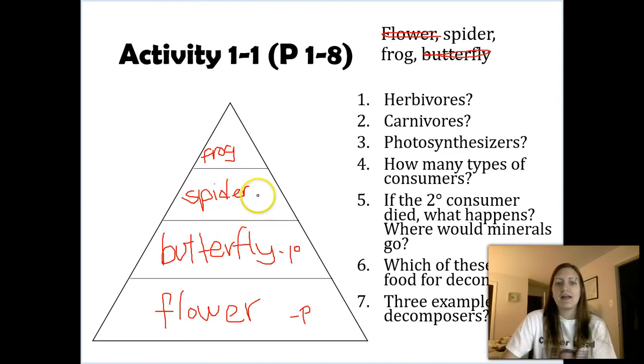So if the spider is eating a butterfly, that must make it a secondary consumer, because it's an organism that's eating this primary consumer. For the frog, frog must be tertiary, because it's eating a secondary consumer. You're just going one up. So that answers the first part of the exercise.